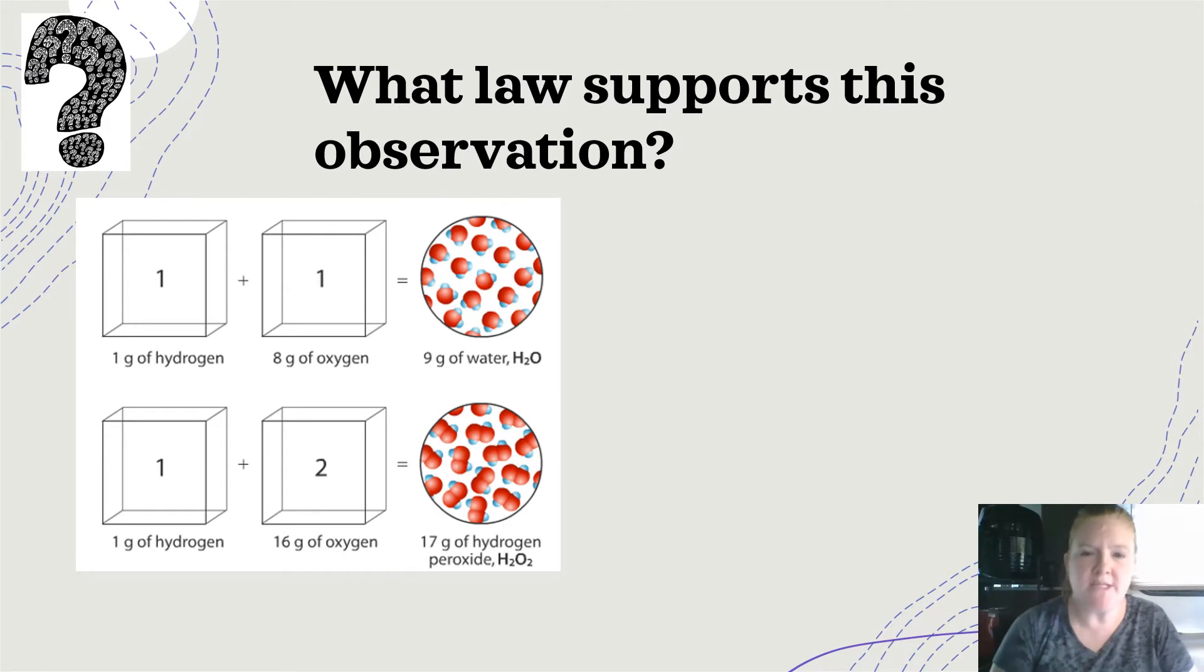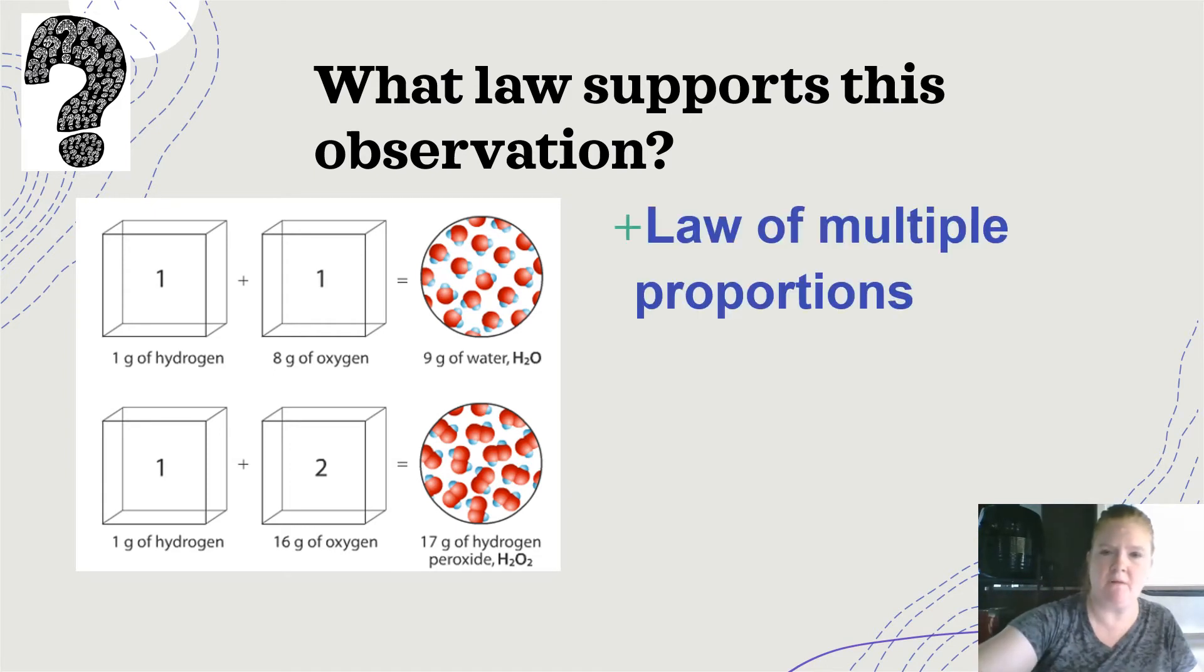What law supports this observation? So let's look at it. So I have one gram of hydrogen and eight grams of oxygen. That gives me nine grams of water. If I have one gram of hydrogen and 16 grams of oxygen, that gives me 17 grams of hydrogen peroxide. I love multiple proportions, right? I can have the same two elements combined in different whole number ratios to form different compounds.